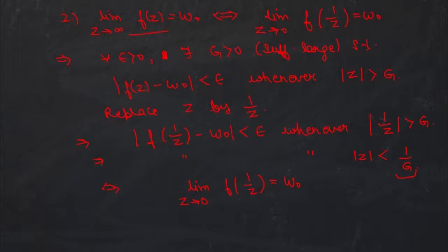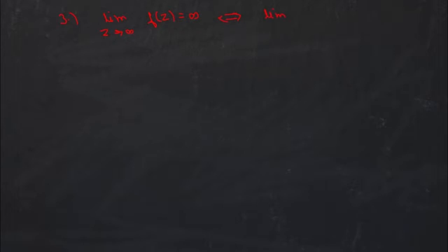The third theorem on the limit at infinity states: the limit as z approaches infinity of f(z) equals infinity if and only if the limit as z tends to 0 of 1/f(1/z) equals 0. To prove this, the left-hand expression means: for every sufficiently large g > 0 there exists a sufficiently large G > 0 such that |f(z)| > G whenever |z| > g.